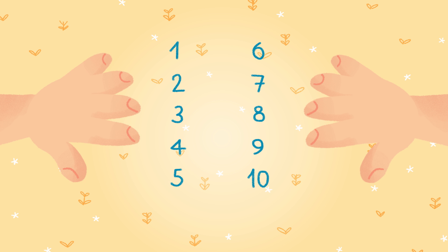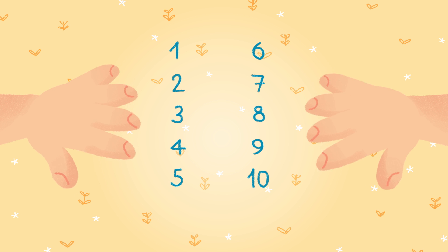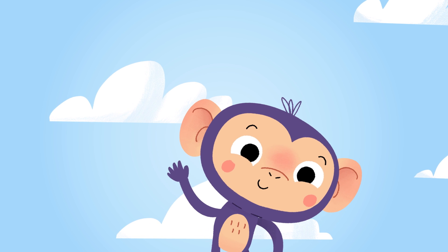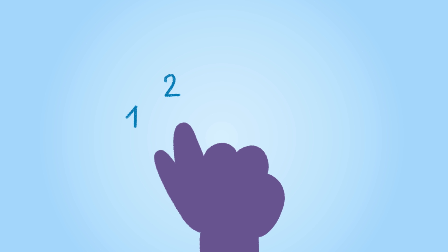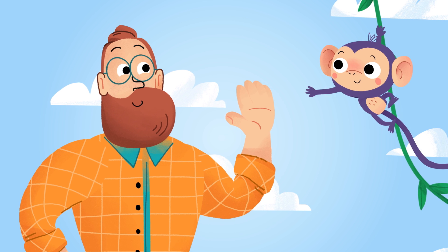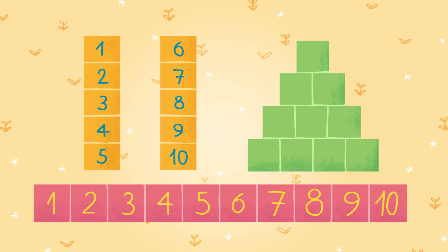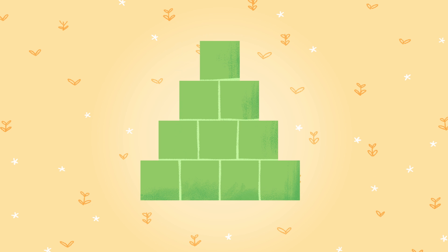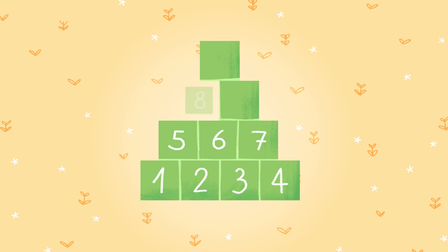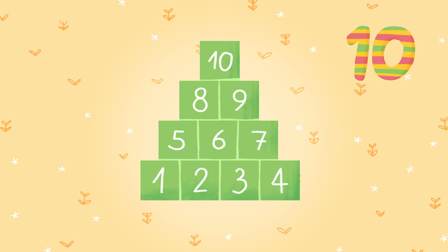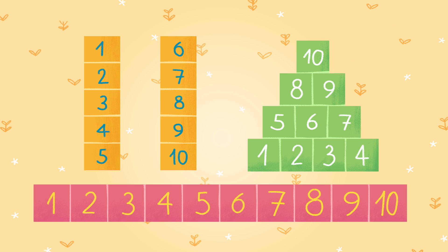One hand has five fingers, and two hands makes 10. Hey, look — that monkey has five fingers too! One, two, three, four, five — give me five, little buddy! Look at this group. Do you think there are 10 green blocks in this pyramid? Let's count: 1, 2, 3, 4, 5, 6, 7, 8, 9, 10. Yes, this group has 10 too! Sometimes you can find 10 by seeing one of these patterns. Which group was easiest for you to count?